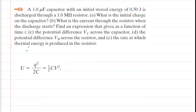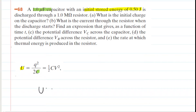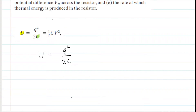We need an expression that relates the stored potential energy on the capacitor, symbolized by U, to the capacitance, symbolized by C. From an earlier chapter, the potential energy stored by the capacitor equals the charge squared divided by 2 times the capacitance. We'll rearrange the equation and isolate Q.